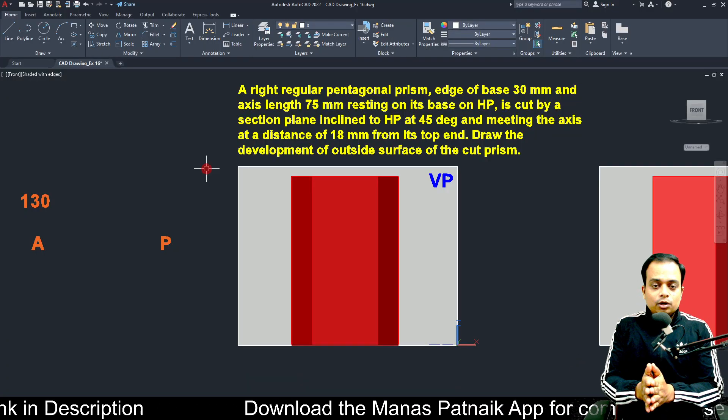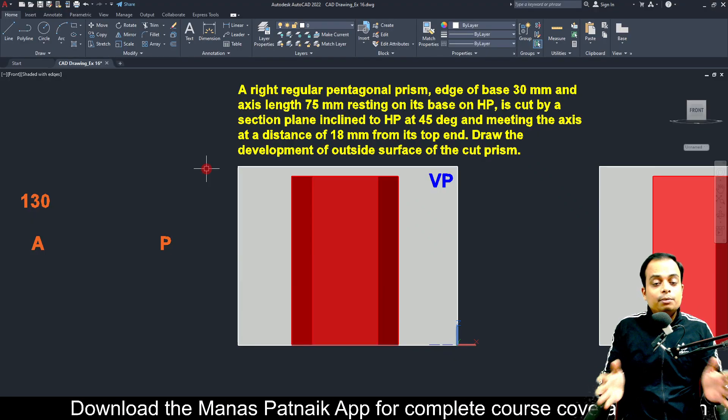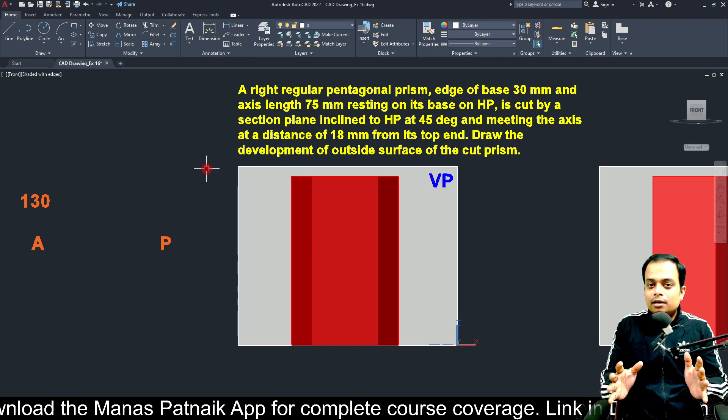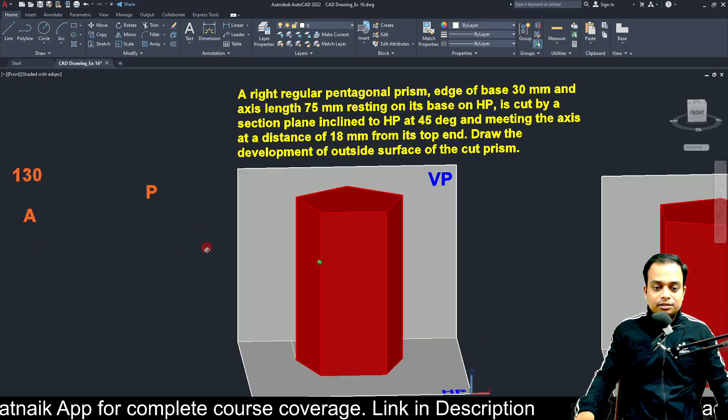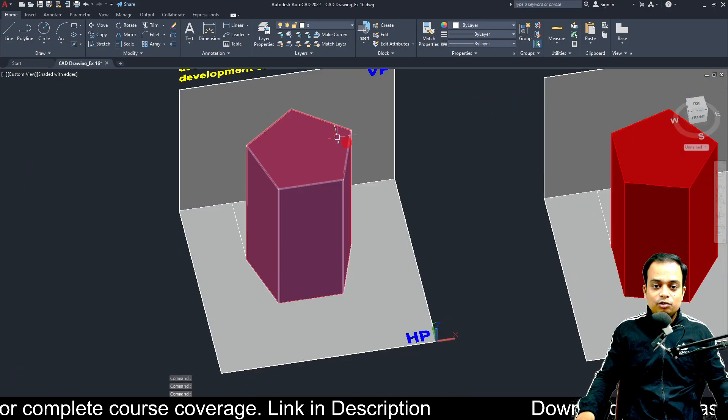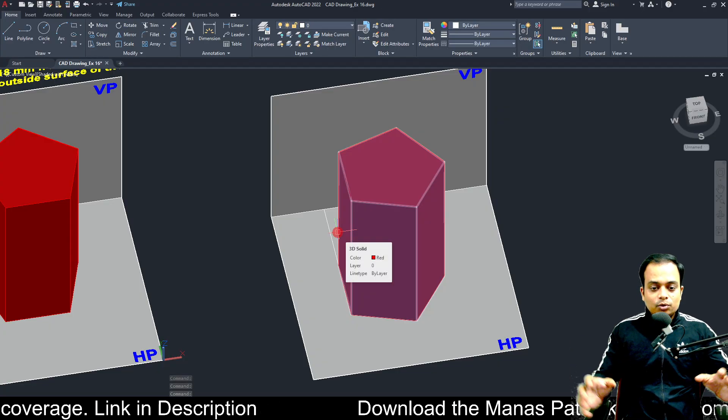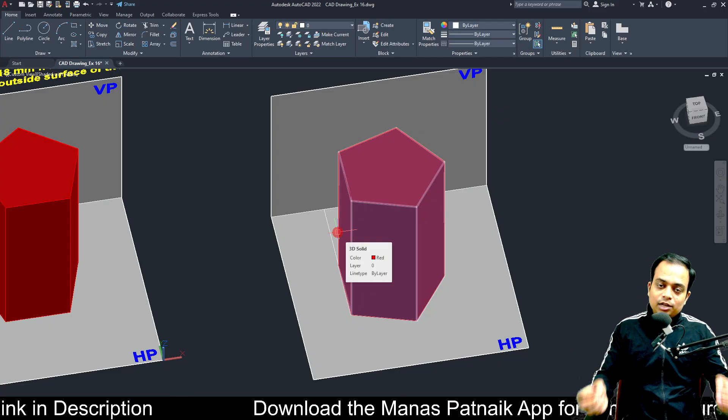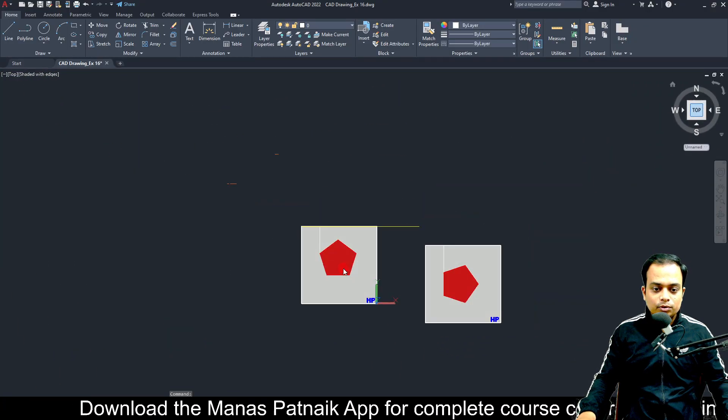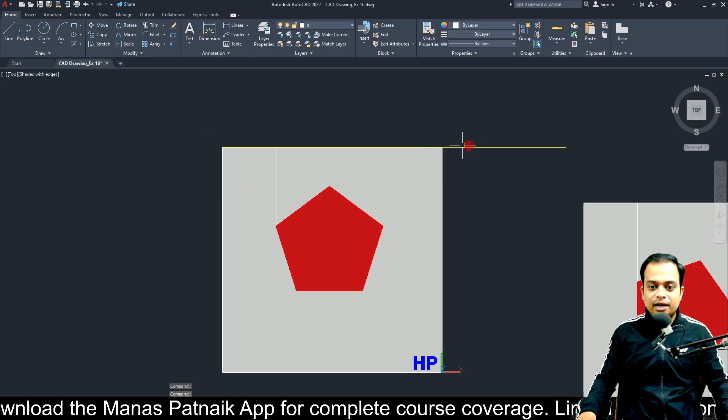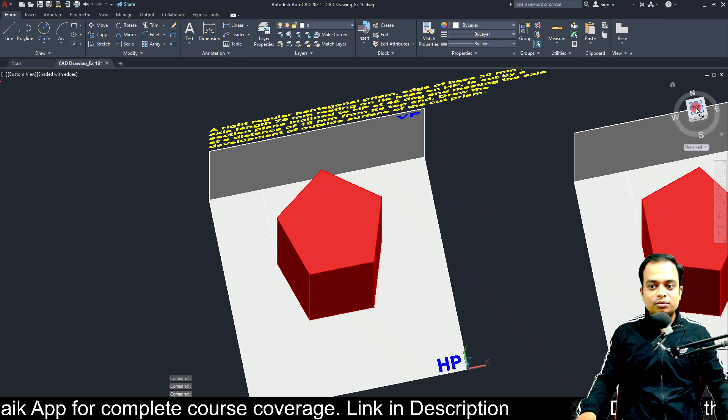Sectional top view has not been asked. So, we are not going to get into that. We will just stick to making the front and top view and we will simply create its development. Now, here in this question, nowhere it has been mentioned how the base is with respect to the vertical plane. Whether the base or one base edge is parallel to VP or one base edge is perpendicular to VP. You've got both the options.